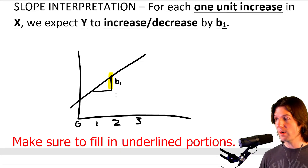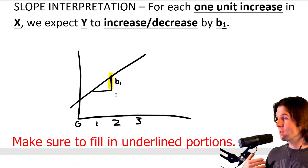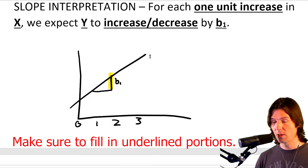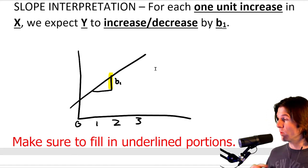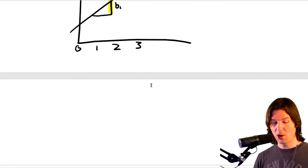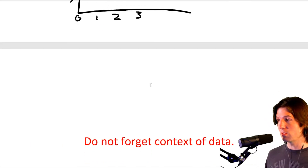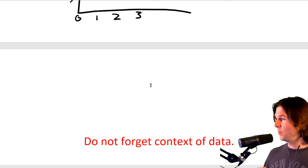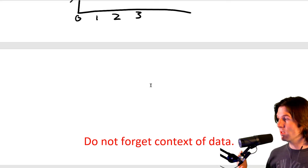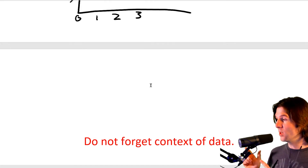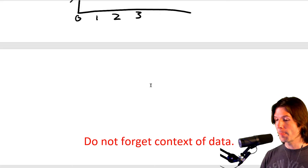We're using the values of X to predict Y, and the line is making the predictions. The slope is for each one unit increase. Do not forget — always give context to your data. If you're talking about height, make sure to talk about inches. If you're talking about GPA, then talk about points on someone's GPA. Give the context to your data.